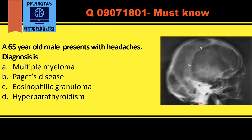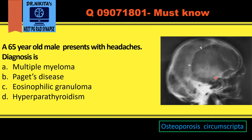In this radiograph of the skull, we see a well-defined lytic lesion in the frontal bone. It is very well differentiated from the adjacent normal bone. This looks like osteoporotic bone — a lytic lesion that is very well defined and circumscribed. So this is osteoporosis circumscripta, which is seen in Paget's disease.